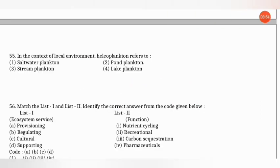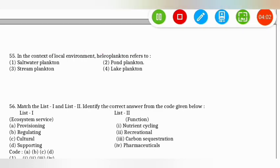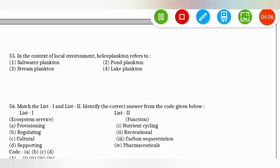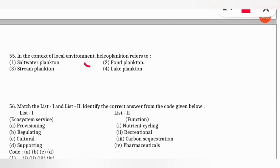The next question: in the context of local environment, helioplankton refers to what kind of plankton? The correct option is option 2 — helioplankton refers to pond plankton. Don't confuse with saltwater plankton; those who live in saltwater are called heliophytes, not helioplankton.